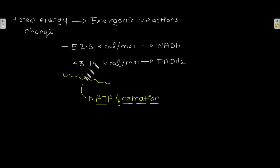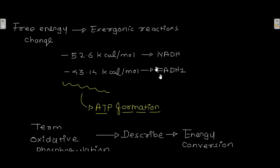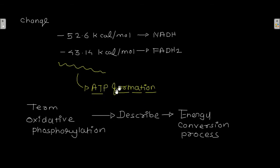This large amount of free energy generated by the oxidation of NADH and FADH2 is utilized in the formation of ATP. ATP is produced by the free energy generated by the oxidation of NADH and FADH2, and that is why the term oxidative phosphorylation is used to describe these energy conversion processes.